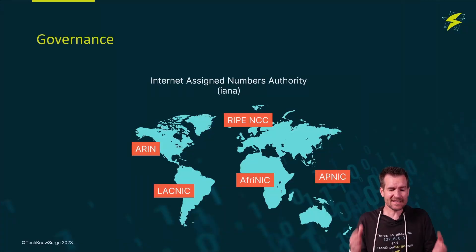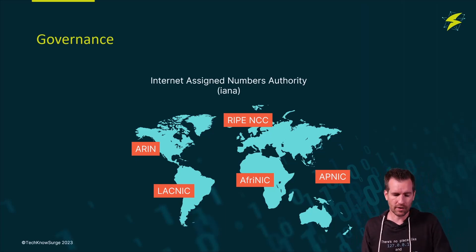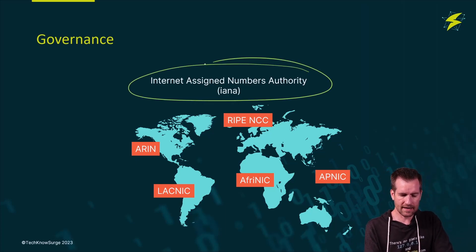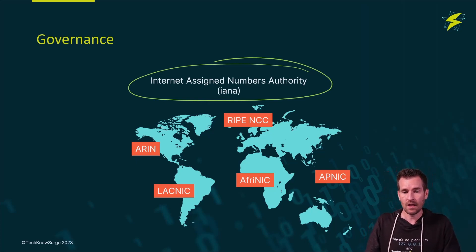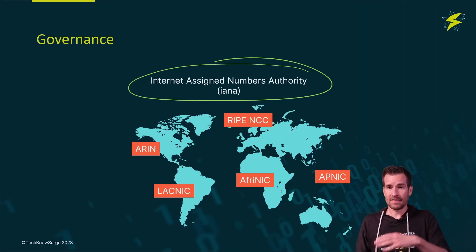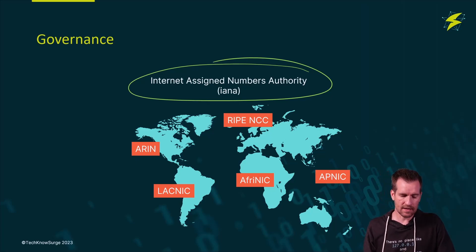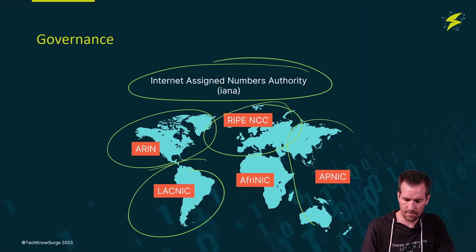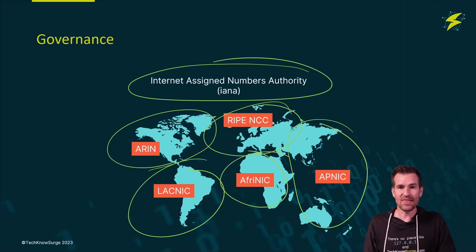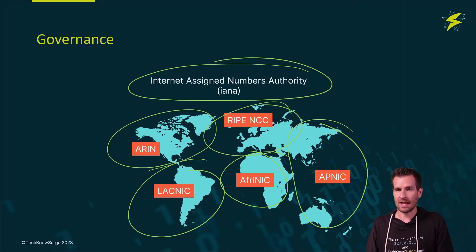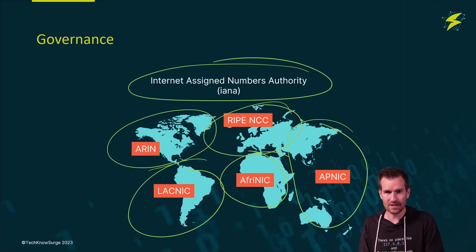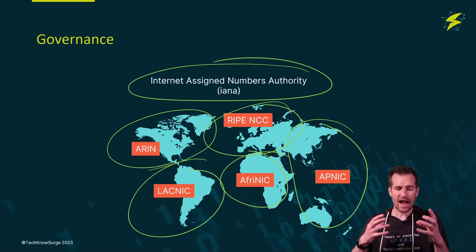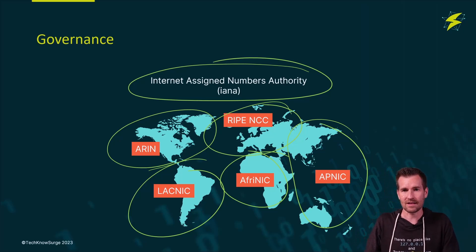So who's in charge of this addressing scheme? There are actually many organizations. There's a top-level organization — the Internet Assigned Numbers Authority — which is in charge of the overall scoping and then hands out certain address ranges to individual organizations that control big sections of the planet. From there, these organizations will hand it out to different internet service providers, and the internet service providers will hand out these IP addresses to certain clients. So that is how things are broken down, because there needs to be some governance around this.